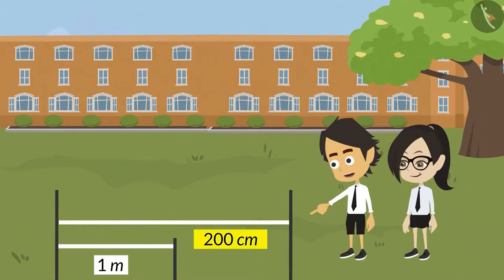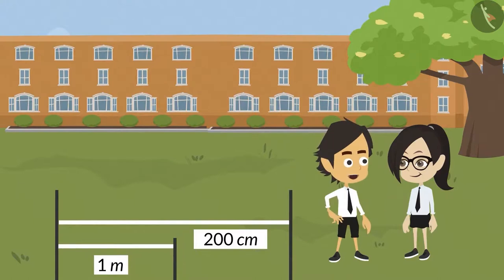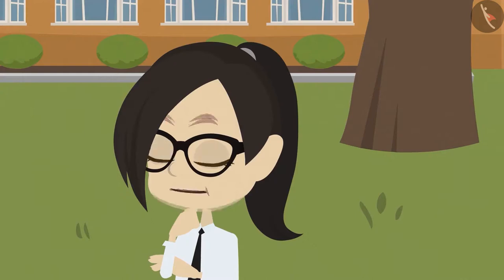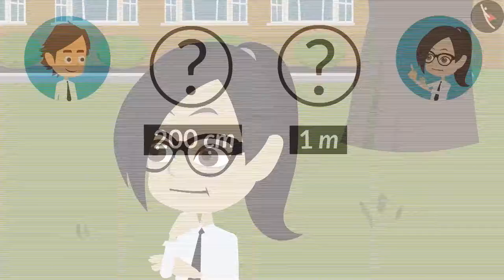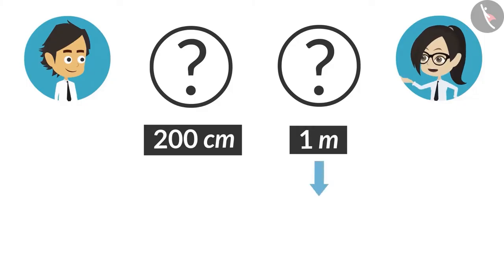Look, one length is in centimeters and one in meters. Then write down both the lengths in meters by converting centimeters into meters. Okay. Now I understand.